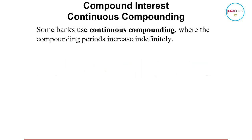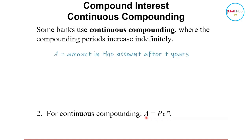For continuous compounding, this is the formula that is being used: A is the amount in the account after t years, P is the principal or initial amount, r is the rate of interest in decimal form, and t is the time in years.